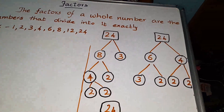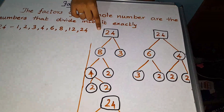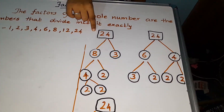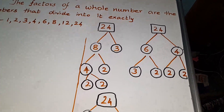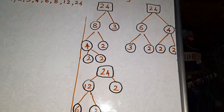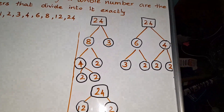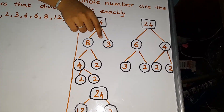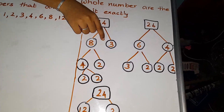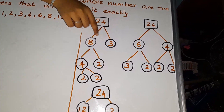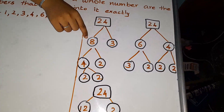Now let us see the factor tree of the number 24. There are 3 ways we can do it. First we are going to see the first way. It is 3 times 8 equals 24, and 3 is a prime number. So we can factorize 8 further.